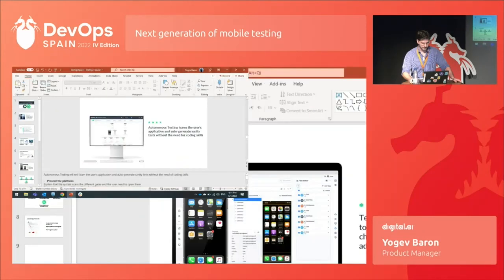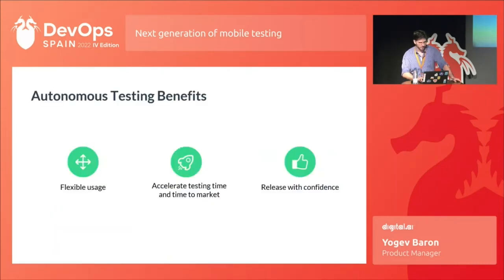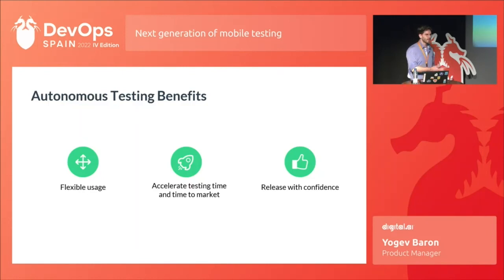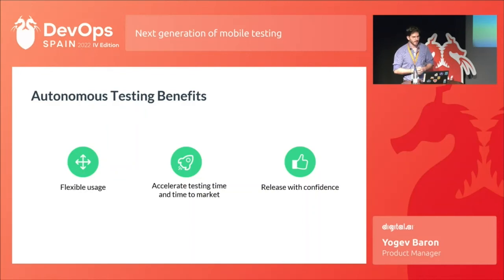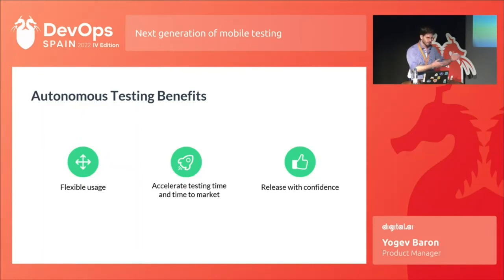Let's talk about the benefits. Using this tool is really, really easy — you don't need to be a developer to use it. You just click a couple of buttons to generate a scanning of your application, a model of your application, and generate tests based on this model. Tests are done automatically and really, really fast. This really increases time to market — since you can create tests based on the model and run them on a real device quickly, you can check for bugs and release with confidence.